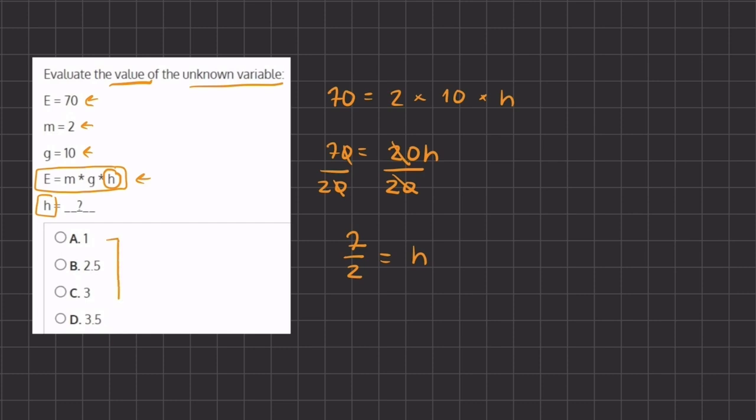Alright, so now this is going to be our answer, 7 divided by 2, but all of our answers are written in decimal form so we need to convert this into decimal form. So 7 divided by 2 is going to be 3.5 equals h. So in this case our answer is going to be D for the value of h which is 3.5.